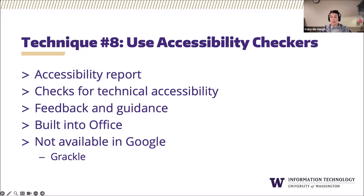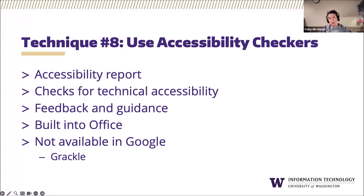Accessibility checkers can also serve as educational tools by raising awareness about digital accessibility best practices and offering guidance for designing more accessible slide decks in the future. An accessibility checker is built into Office 365, which I'll show shortly. Google does not have a built-in accessibility checker, but there is a third-party plugin called Grackle that helps fill that gap. At this time, Grackle products can't be included in the UW instance of Google Workspace due to security concerns, but that may change as Grackle has made significant improvements — stay tuned.